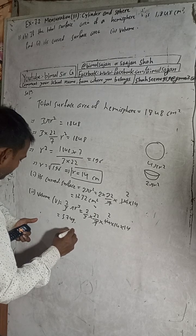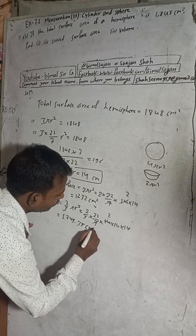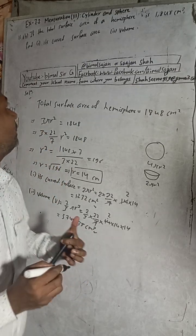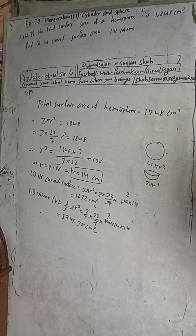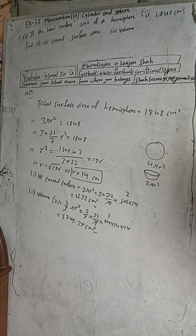5749.33, that is cm³. So dear students, this is the solution of question 11B. The answer for curved surface area is 1232 cm², and the volume is 5749.33 cm³. So this is the solution students.